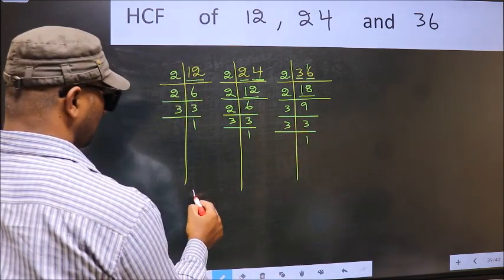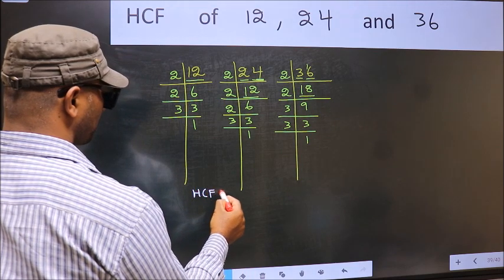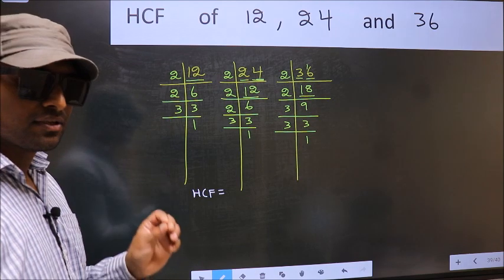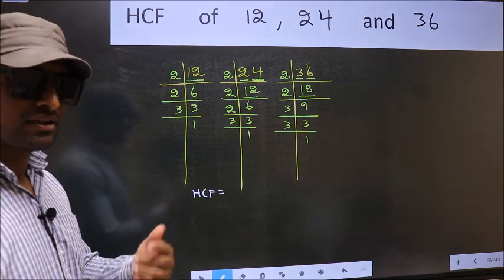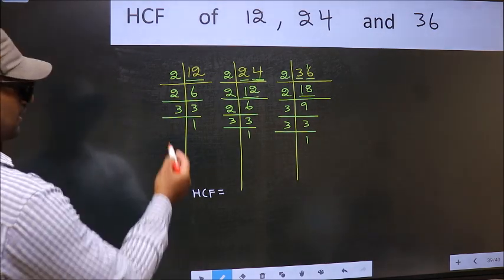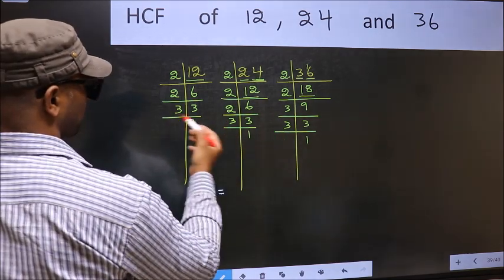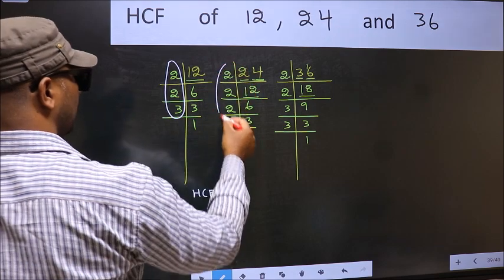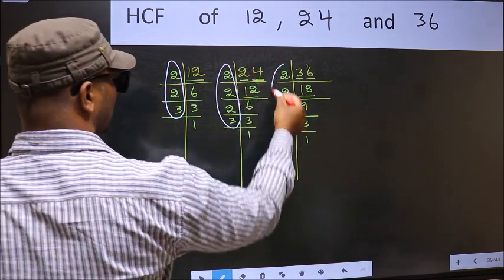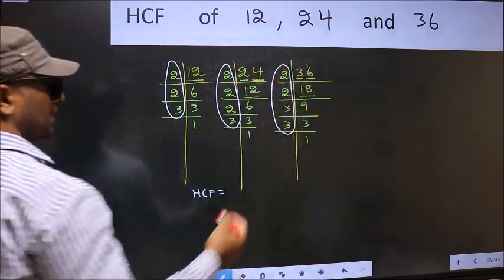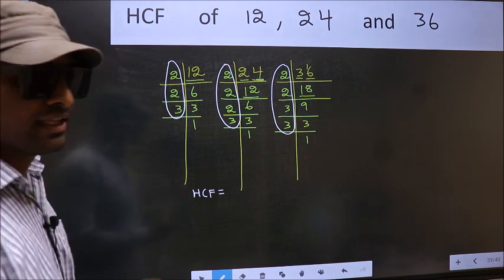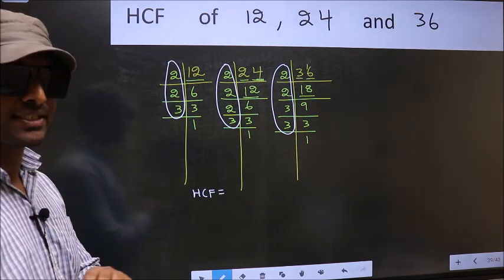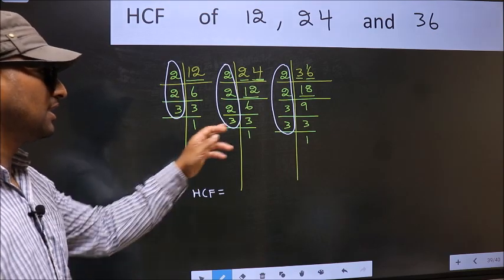Therefore our HCF is the product of numbers which should be present in these 3 places. That is here, and here, and also here. I repeat. HCF is the product of numbers which should be present in these 3 places.